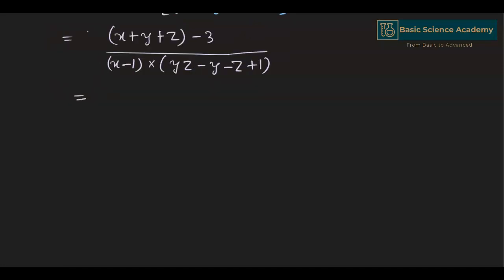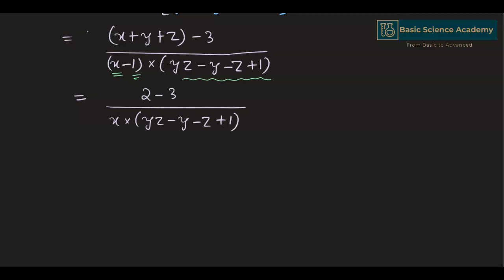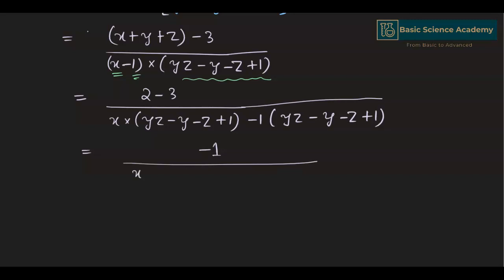Since x plus y plus z equals 2, this gives us 2 minus 3 divided by the expanded denominator. Multiplying out x by (yz minus y minus z plus 1) and minus 1 by (yz minus y minus z plus 1), the numerator becomes minus 1. The denominator expands to xyz minus xy minus xz plus x minus yz plus y plus z minus 1.